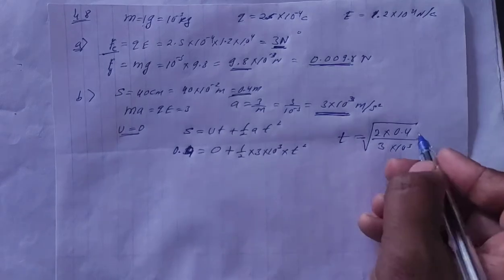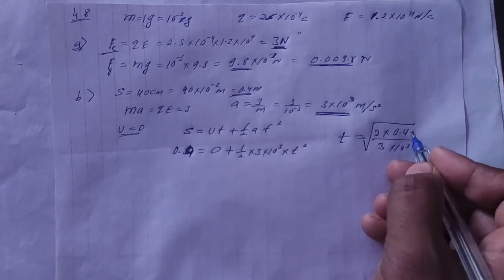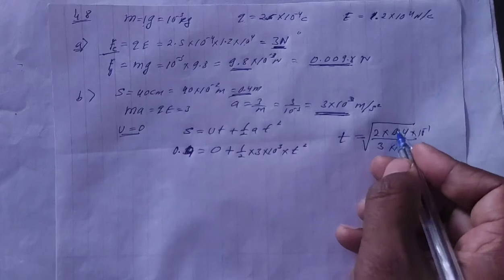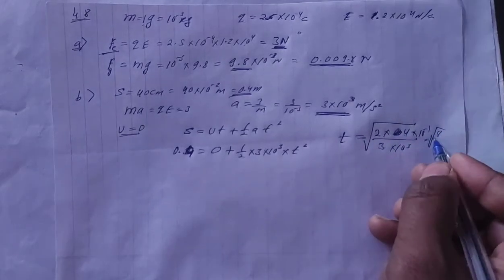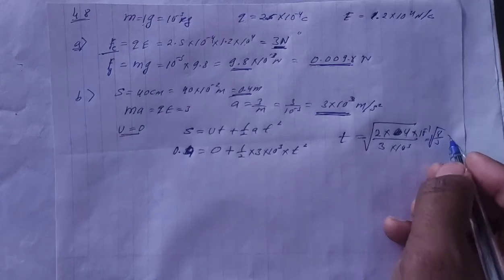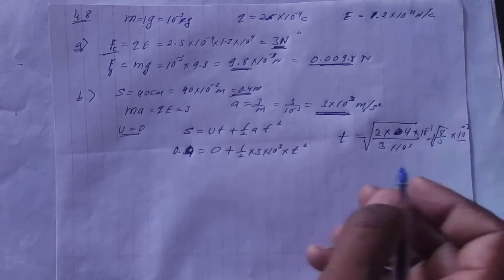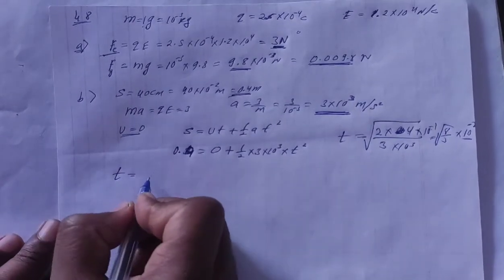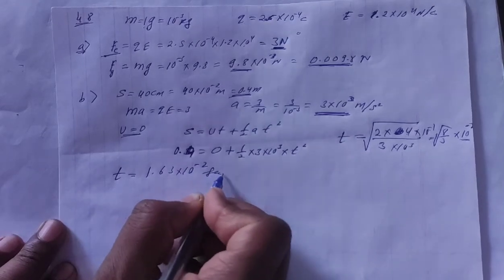So in place of s, we write 0.4. So t is equal to 2 into 0.4 divided by 3 into 10 to the power 3. We'll get the answer here. Let's solve this. Here, we make it 4 and write 10 to the power minus 1. So here we get 4 into 2 is 8. That is root 8 by 3, and here 10 to the power minus 4. Root of 10 to the power minus 4 is 10 to the power minus 2. That is 8 by root 3, 10 to the power minus 2. So time will be 1.63 into 10 to the power minus 2 second.